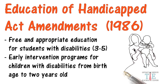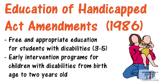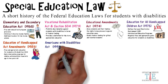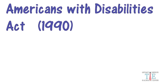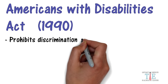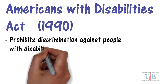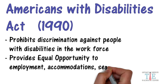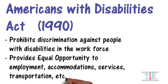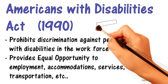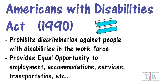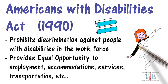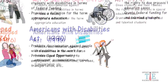The next law is the rather famous Americans with Disabilities Act of 1990. The key takeaways are that it prohibits discrimination of people with disabilities in the workforce, and provides equal opportunity to employment, accommodations, services, transportation, and more. Equal opportunity is provided to a broad number of people, including HIV-positive people. The ADA makes it illegal to discriminate against people with disabilities anywhere, which includes the school systems.